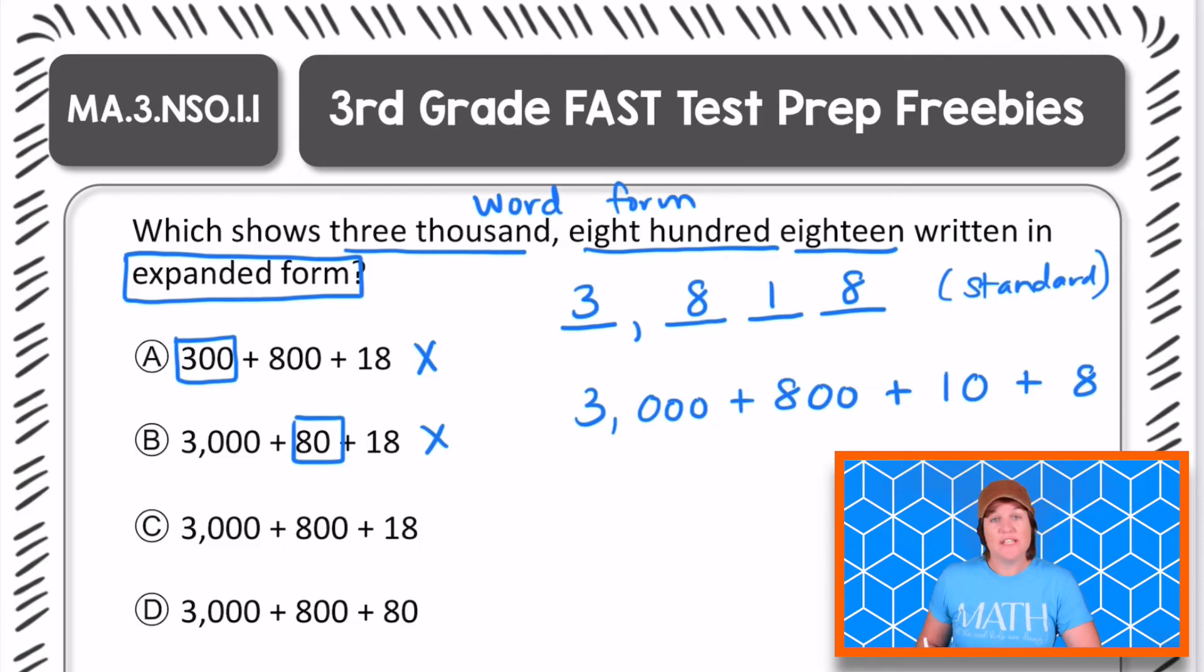Next we have for C we have 3,000 that looks good plus 800 that looks good plus 18. So there we did not fully expand the 10 plus the 8 that is still pushed together. So technically this is our best answer choice so far but we need to make sure that we also investigate choice D. So let's do that.